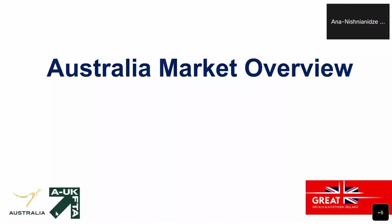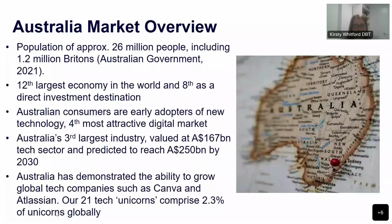Thanks very much, Anna. I'm here to give a bit more of an overview on the Australian market for those UK companies looking to expand. Australia's population is around 26 million people, and about 1.2 million Brits already call Australia home — so you'll be in good company. We're tied to the UK by culture, common language, and by business and legal practices, which makes Australia a pretty desirable market for international expansion. Australia has the 12th largest economy in the world and is ranked 8th as a top direct investment destination.